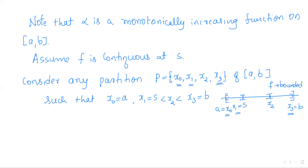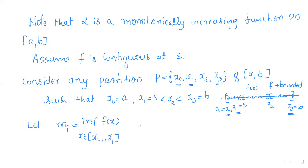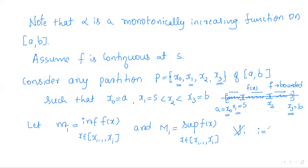With respect to this partition, [a, b] is divided into three sub-intervals: [x₀, x₁], [x₁, x₂], [x₂, x₃]. Since f is bounded on [a, b] it is bounded on each sub-interval, so by the least upper bound and greatest lower bound properties, infimum and supremum exist. Let mᵢ be the infimum and Mᵢ be the supremum of f(x) over [xᵢ₋₁, xᵢ], for i = 1, 2, 3.